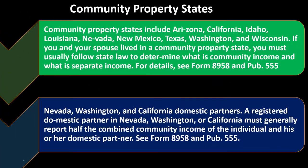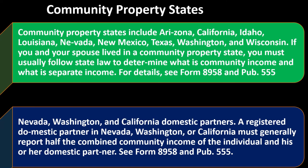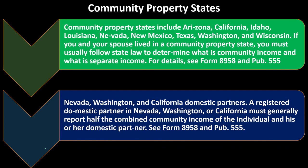Make sure you're taking into consideration the regulations in conformity with the state you're in, whether it's a community property state or not. For Nevada, Washington, and California domestic partners: a registered domestic partner must generally report half the combined community income as his or her own. See Form 8958 and Publication 555 for more details.